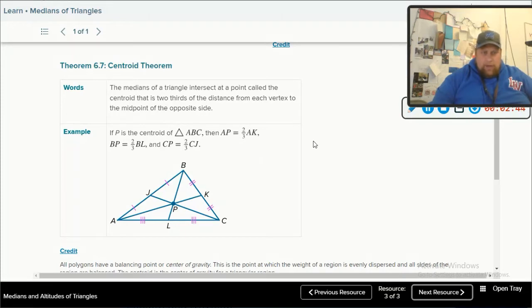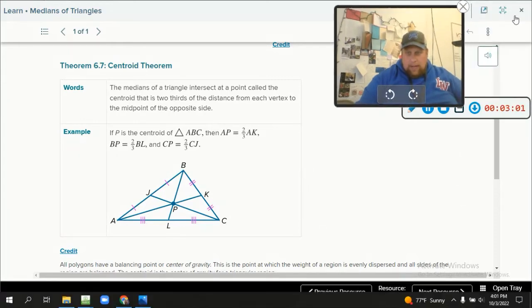So write this down. The medians of a triangle intersect at a point called the centroid that is two-thirds of the distance from each vertex to the midpoint of the opposite side. I have some things. Go ahead and write this down. I do want to show it to you, though, a little differently. So feel free to pause this, but I'm going to go back to what I got going on.